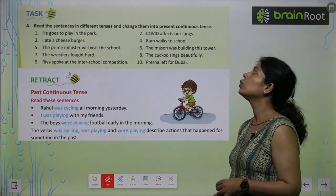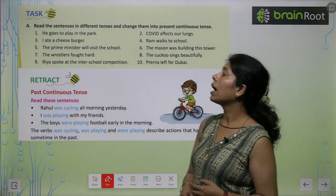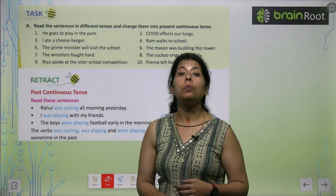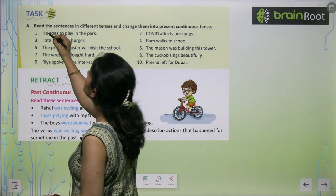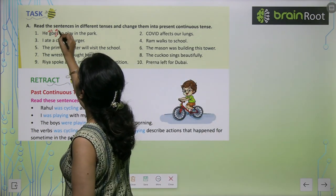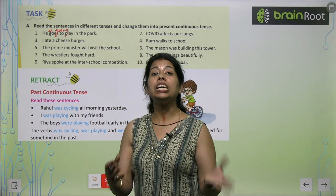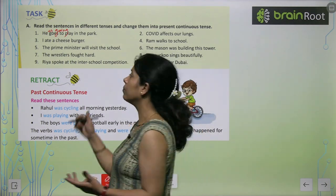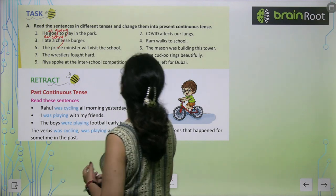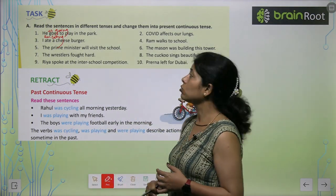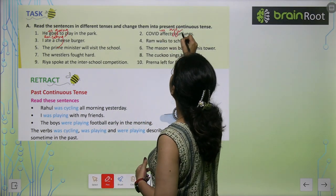Read sentences in different tenses and change them into present continuous tense. 'He goes to play in the park' becomes 'He is going to play in the park.' 'I ate our cheeseburger' becomes 'I am eating our cheeseburger.' 'COVID affects our lungs' becomes 'COVID is affecting our lungs.'